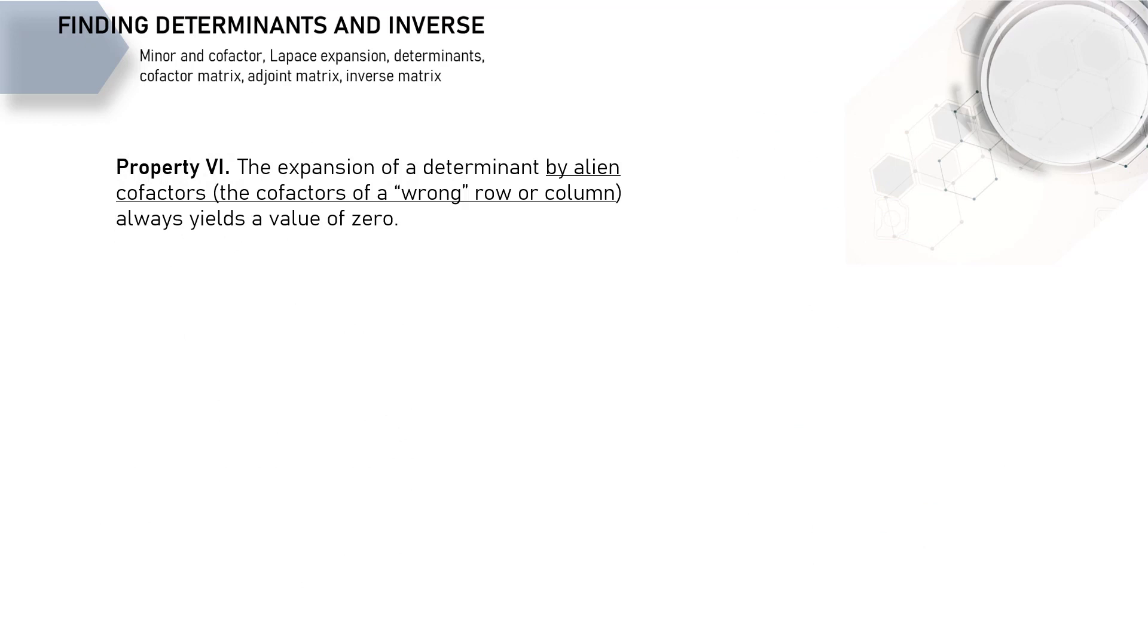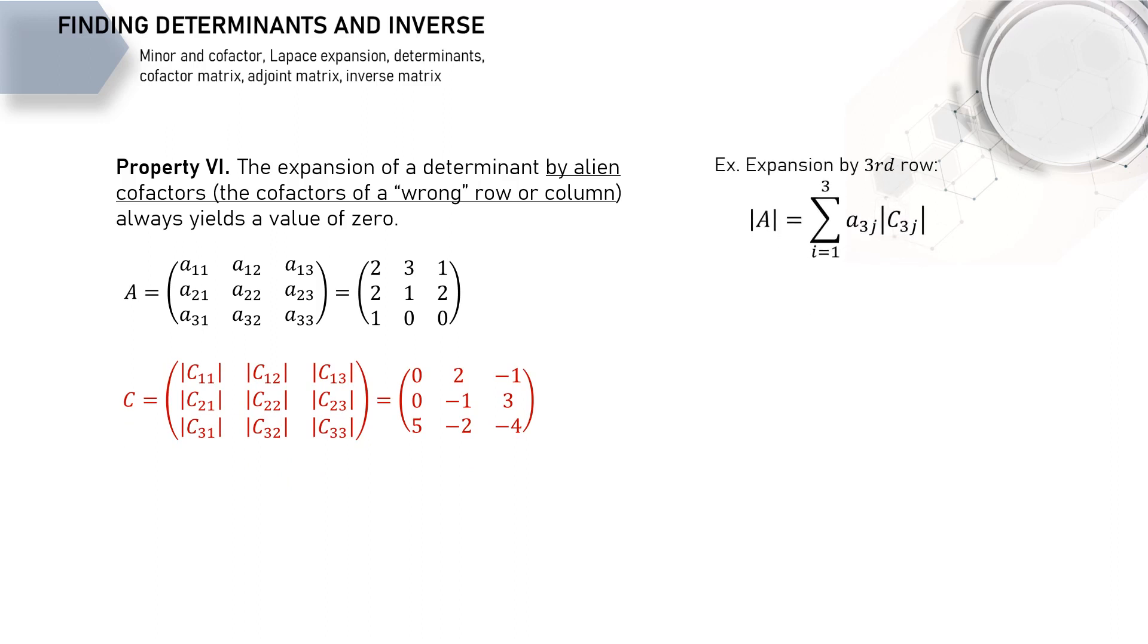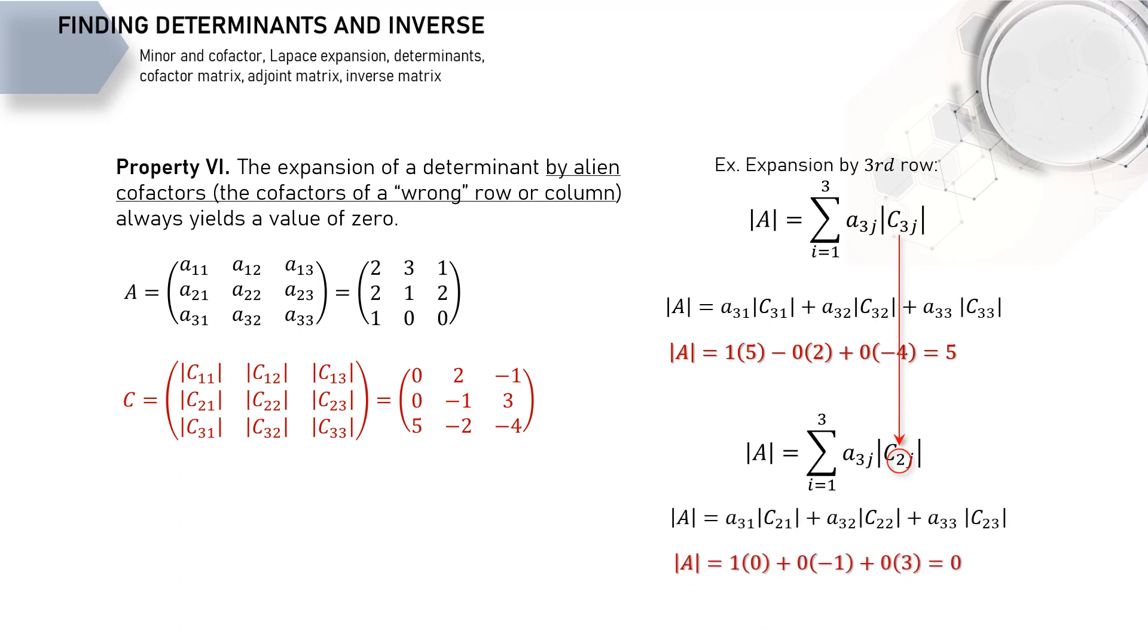Lastly, we have this sixth property of determinant. Just recall our determinant calculation before. We have this matrix, matrix A. Accordingly, we get this cofactor matrix. Calculating the determinant correctly using Laplace expansion of the third row will get us this formula. And the calculation result is the determinant of matrix A equals to 5. Now, what if we input the wrong cofactors? Instead of using the elements of the third row cofactor, here we use the second row. According to this last property, the resulting determinant will always be zero as we get here.